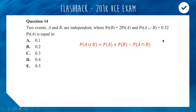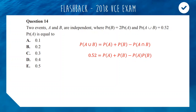Here's the formula. The probability of A union B we have is 0.52, so I'm going to sub that in. Now we can use the fact that because A and B are independent, the probability of A intersection B — which is probability of A and B both happening — you do the product: probability of A times probability of B. You can only do that for independent events.